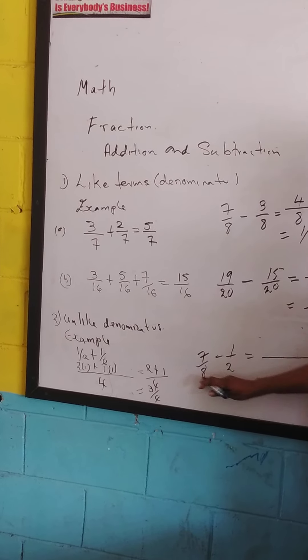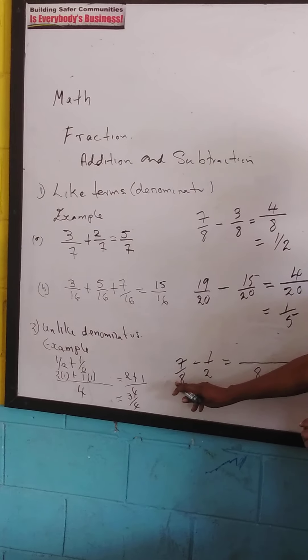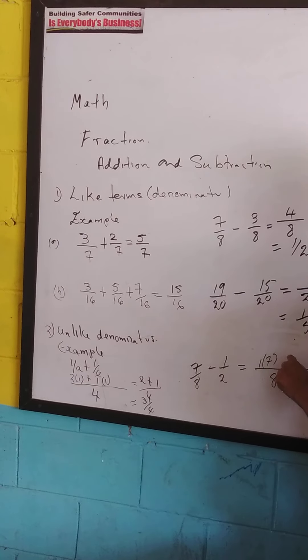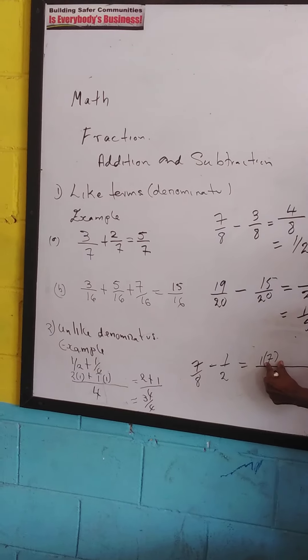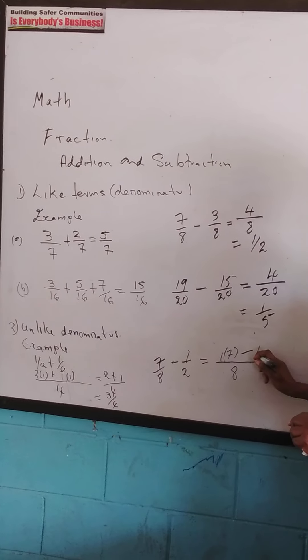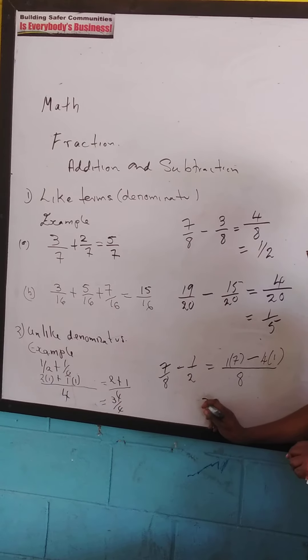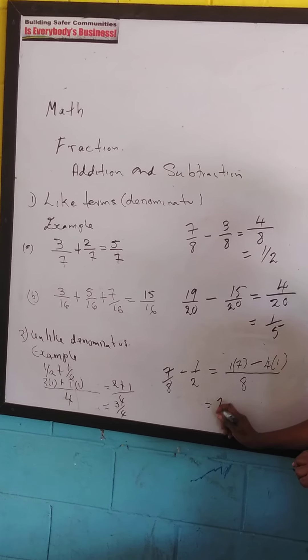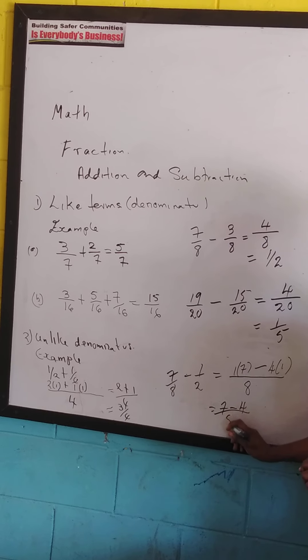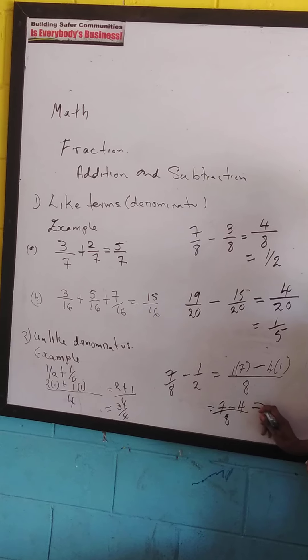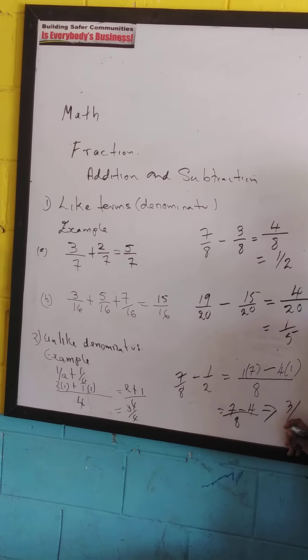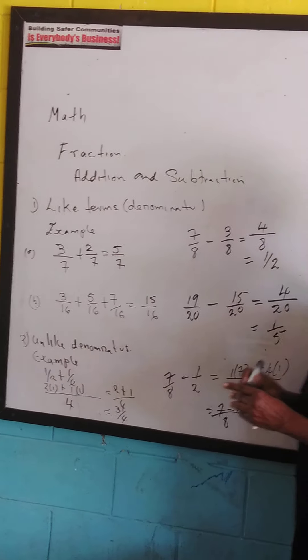So 8 into 8 is 1 times, and there's a 7, so we put back our 7. Remember, brackets mean to multiply. Minus 2 into 8, 4 times the 1. So we end up with 7, 7 minus 4, 4 over 8. 7 minus 4 is going to give us 3 over 8. So there we have it class.